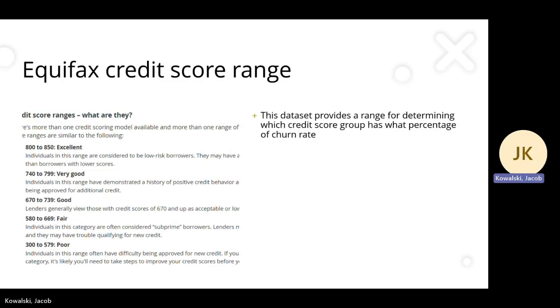The next data set is the Equifax credit score range. This data set provides a range for determining which credit score group has what percentage of churn rate.